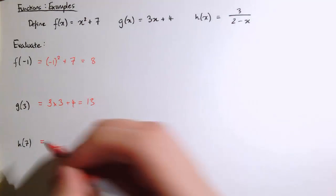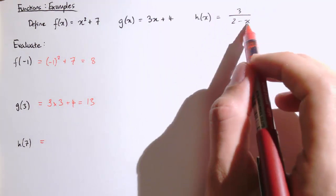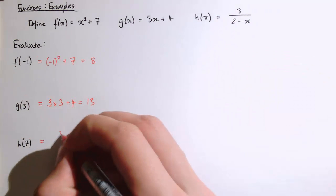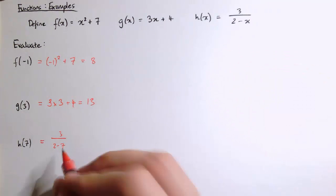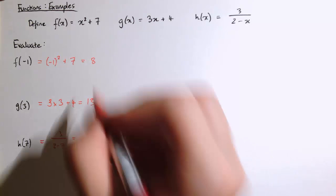And in the final one, h of 7, we're going to put 7 into this machine and see what we get out. So we'll replace x with 7 and that's 3 divided by 2 minus 7. So that's 3 divided by minus 5, that's minus 3 fifths.